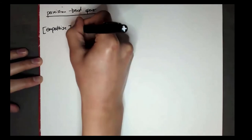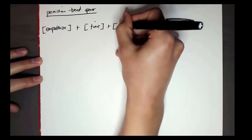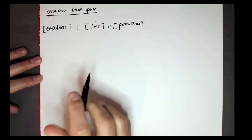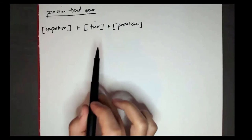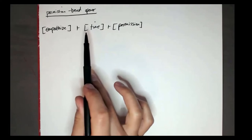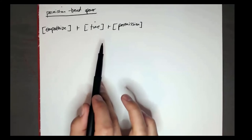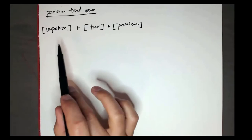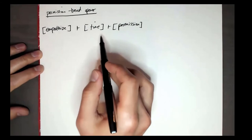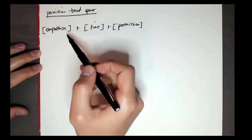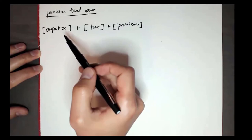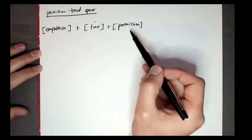A permission-based opener has three elements: empathize, plus a request for a specific amount of time, plus asking for permission. The most common one I teach: 'Hey, I know I probably caught you in the middle of something' — that's the empathize piece, acknowledging what they might be thinking. 'But do you have 30 seconds for me to tell you why I'm calling?' — specific amount of time. And then: 'You can let me know if you want to keep chatting.' Eight or nine times out of ten, people say yes. Tonality matters more than the exact words.